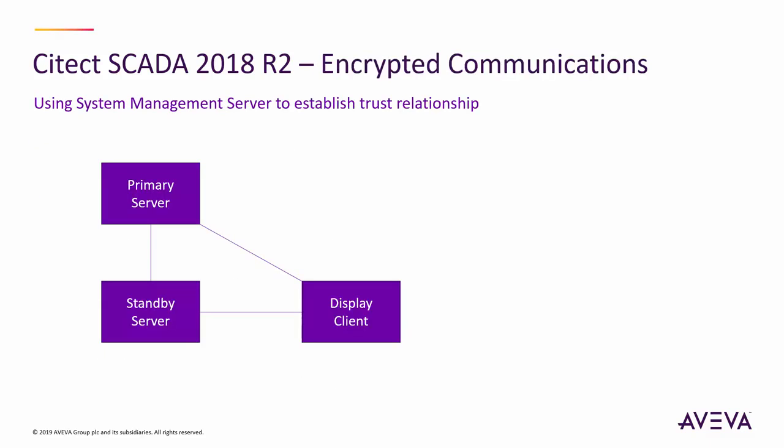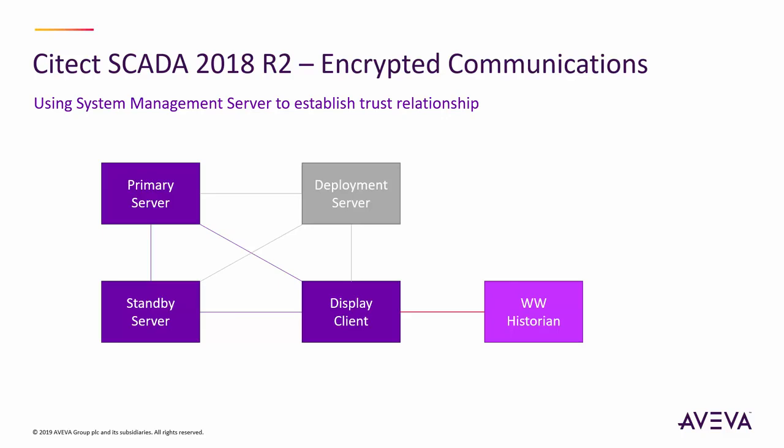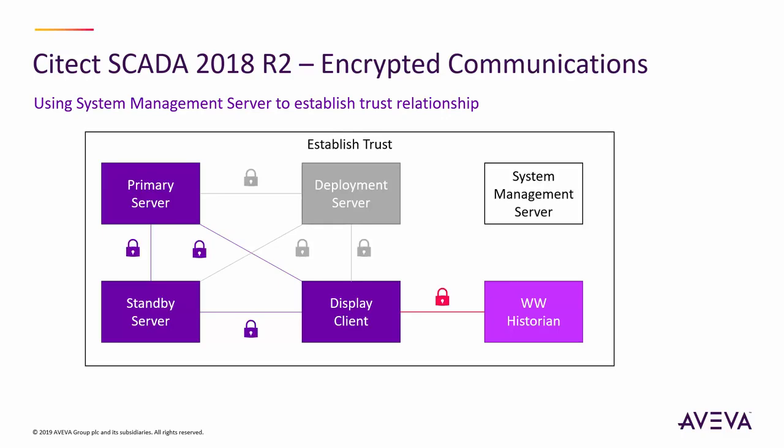By way of example, a standard redundant configuration with a primary and secondary server pair, a remote client, a historian, and a deployment server can now easily be encrypted with the addition of a system management server. This facilitates the creation and deployment of certificates to establish a trust relationship between all system nodes.